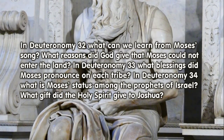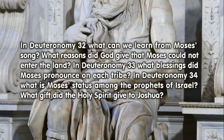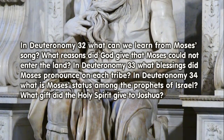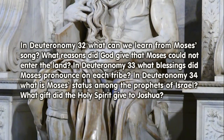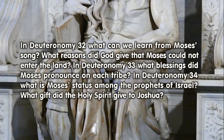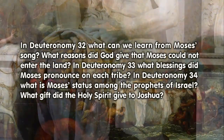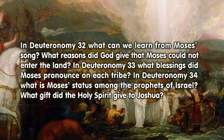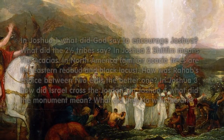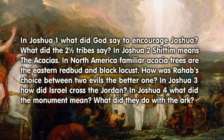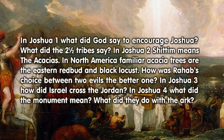In Deuteronomy 33, what blessings did Moses pronounce on each tribe? In Deuteronomy 34, what is Moses' status among the prophets of Israel? What gift did the Holy Spirit give to Joshua? In Joshua 1, what did God say to encourage Joshua?